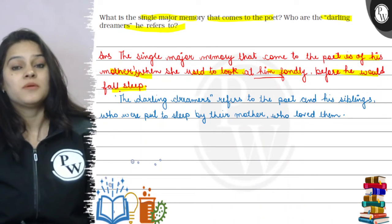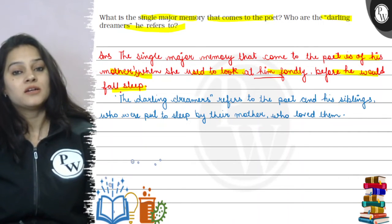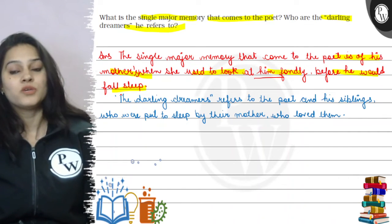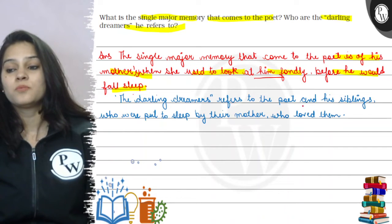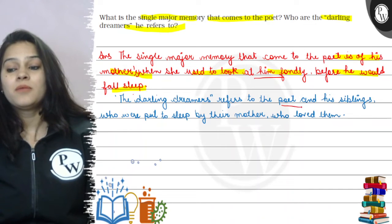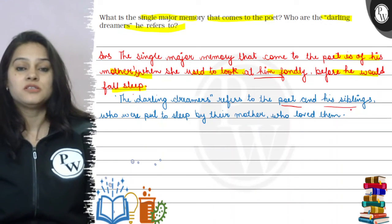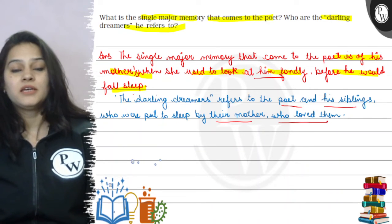The darling dreamers refers to the poet and his siblings, who were put to sleep by their mother who loved them.